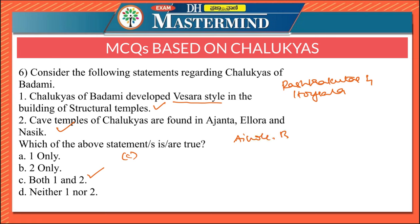Aihole, Badami, and Pattadakal have structures belonging to the period of the Chalukyas of Badami. Cave temple architecture was also famous under the Chalukyas, with their cave temples found at Ajanta, Ellora, and Nasik. These are very important points for art and culture — please remember.